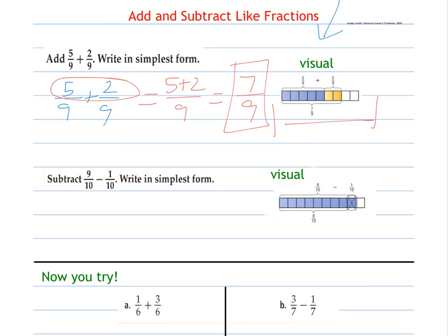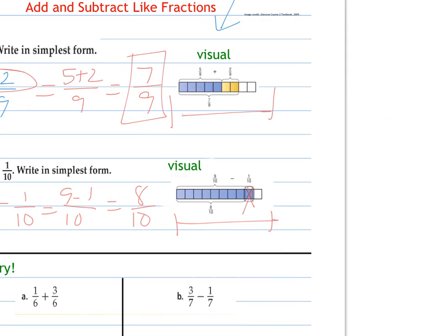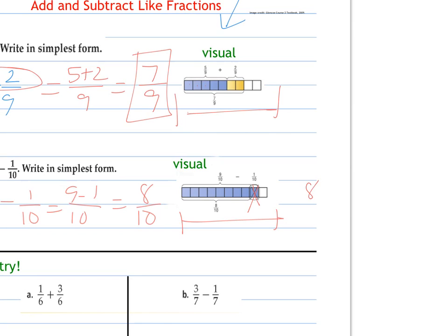Same thing for subtraction. I have nine tenths, and I'm taking away one of the tenths. So this whole thing is ten. I have nine of them, and I take out one. That's nine minus one, which says I have eight tenths. If that's in simplest form though, I find a common factor that eight and ten have. Since eight and ten are both even, they're both divisible by two. So eight tenths is the same as four fifths.